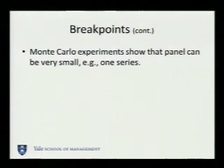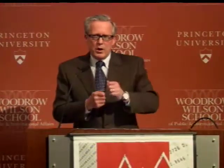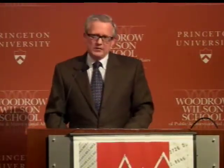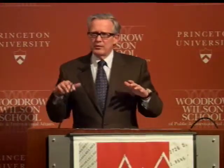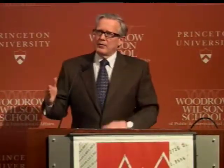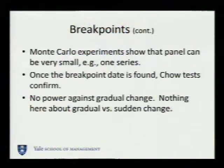This procedure can be done on very small panels — a panel of one — but the power comes from borrowing strength from the cross-section. So even if the break occurs towards the very end of the time series, since the power is coming from the cross-section, you don't need to worry about endpoint problems. Once we find the breakpoint, we can confirm for each series with a standard Chow test. This Bai procedure tests against the alternative of no change. We're identifying the date that there's a change — it may have happened gradually or suddenly.